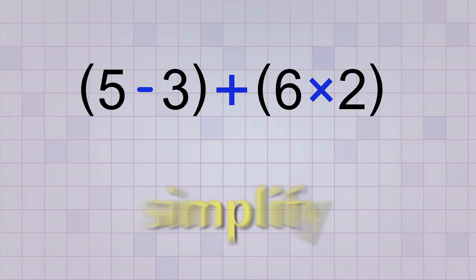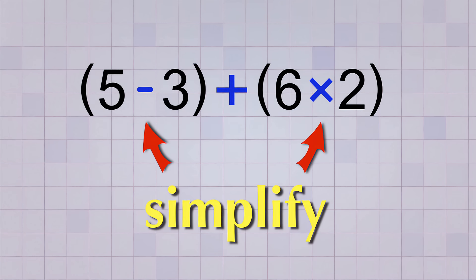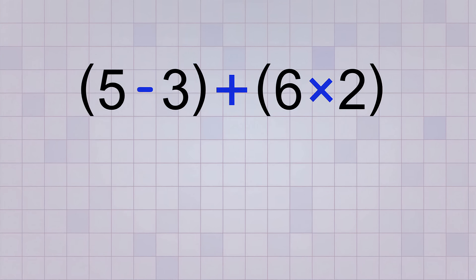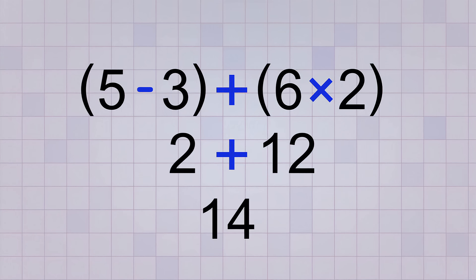In other words, we need to simplify both of our parentheses groups before we can do the addition in between them. The first group, 5 minus 3, simplifies to 2. And the second group, 6 times 2, simplifies to 12. Now we can do the last operation and add the values that we got from simplifying. 2 plus 12 equals 14.